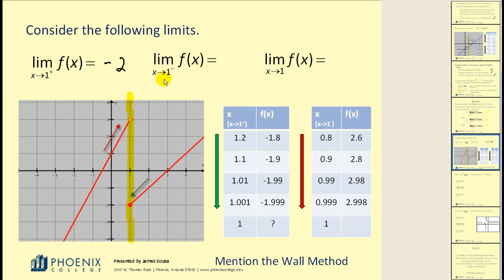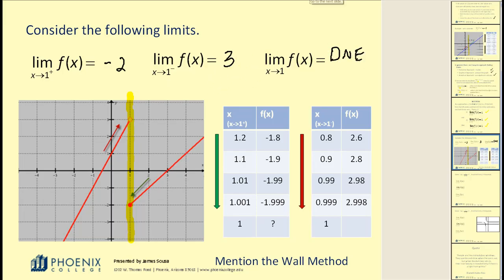Now, looking at the limit as x approaches positive one from the left: on the graph we'd be approaching from the red arrow, and it looks like the y values are approaching positive three. The table verifies that as we approach positive one from the left — values less than one — it is indeed approaching positive three. Now remember, to find the two-sided limit, these two one-sided limits must be the same, and obviously they're not. Therefore, we conclude that this limit does not exist.